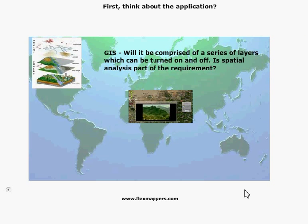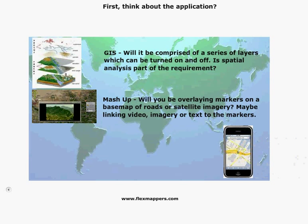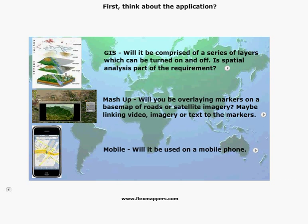First, think about the application. What type of mapping application are we going to build? I've given three basic options here. The first is a GIS application — Geographic Information Systems — which uses intelligence on the server end to do various spatial analyses. The second would be consumer applications, sometimes called mashups; Google Maps is a good example. And then finally, mobile.